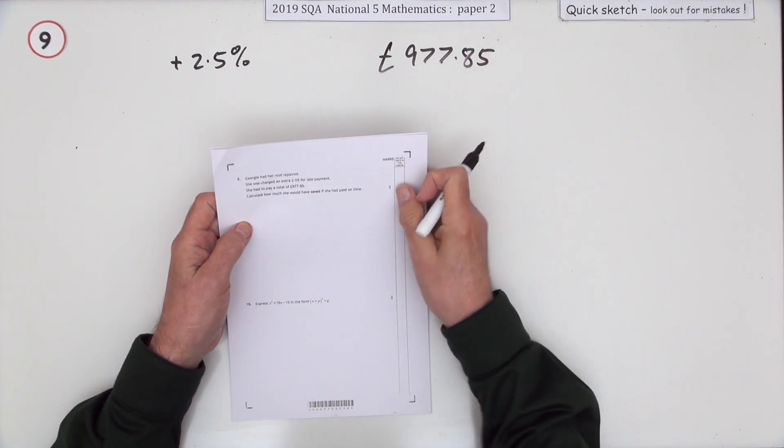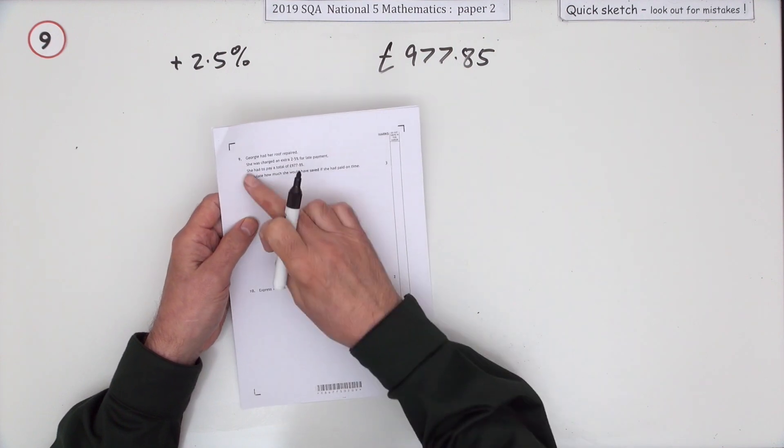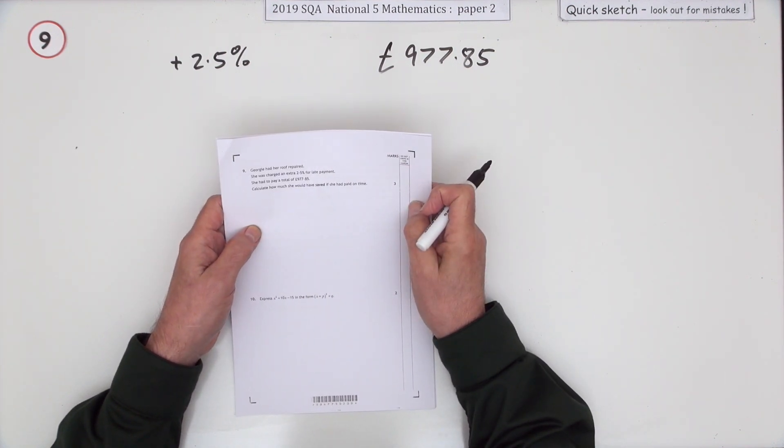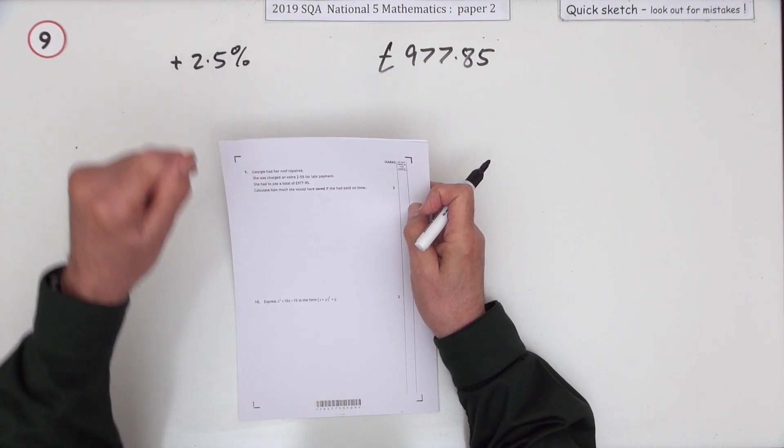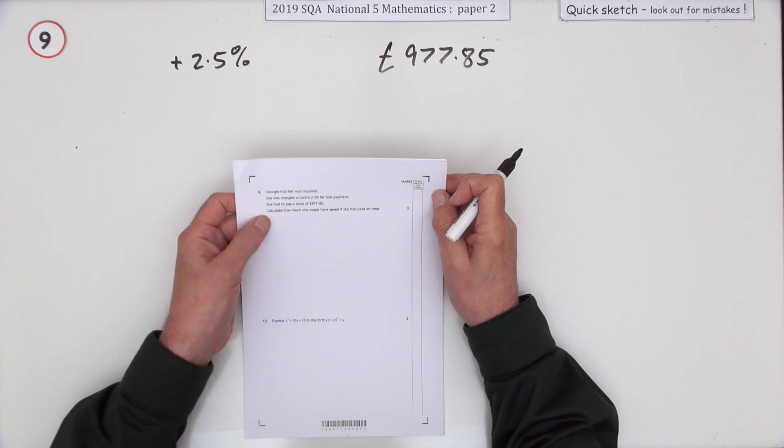Number nine from paper two of the 2019 National 5, a reverse percentage question worth three marks. Georgie had a roof repaired. She was charged an extra 2.5 percent for late payment, which came to £977.85.